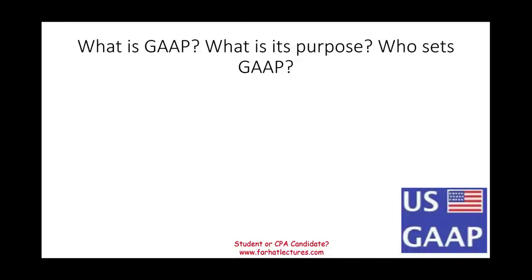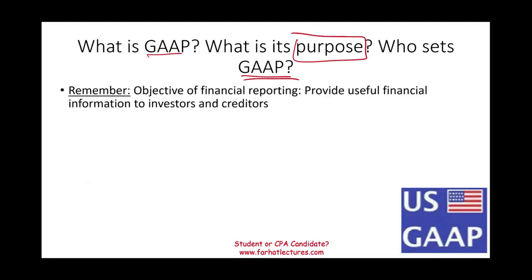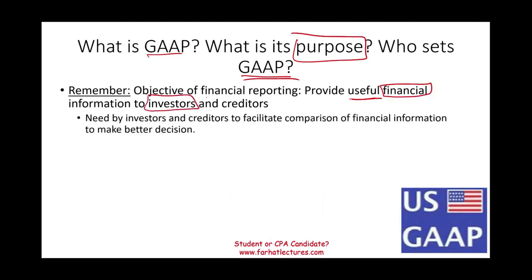Hello and welcome to this session in which we will discuss what is GAAP, what is the purpose of GAAP, and who sets GAAP. Let's review real quick: what is the objective of financial reporting? Why do we have financial reporting? Financial reporting is designed to provide useful financial information to two groups of people — mainly investors and creditors — the groups that fund companies either through loans or through equity investments.